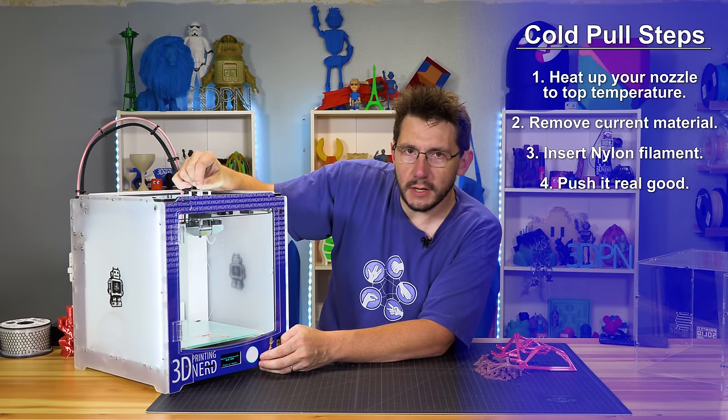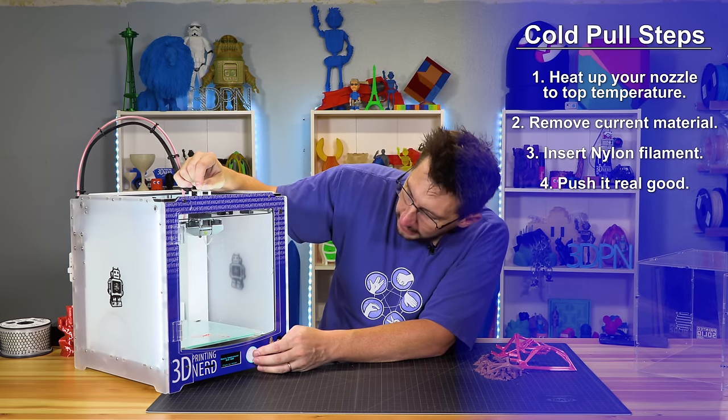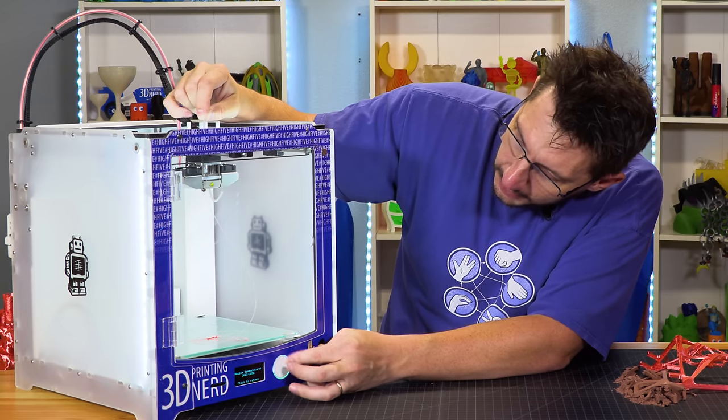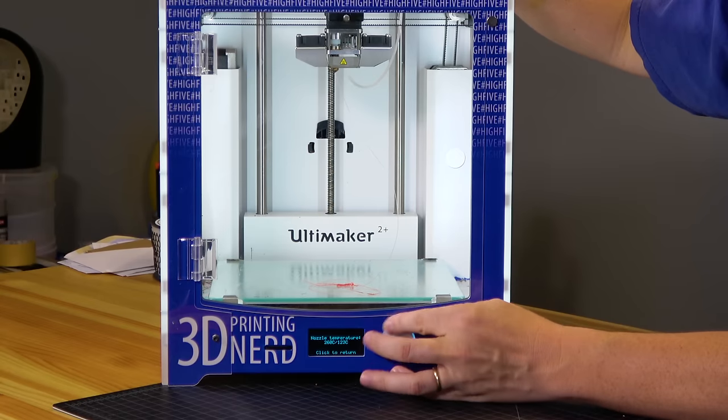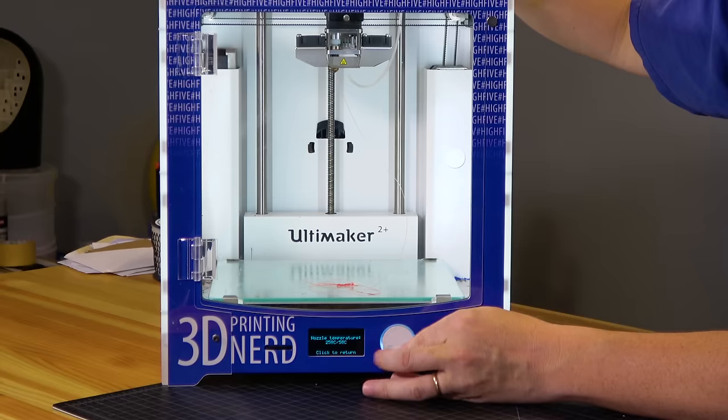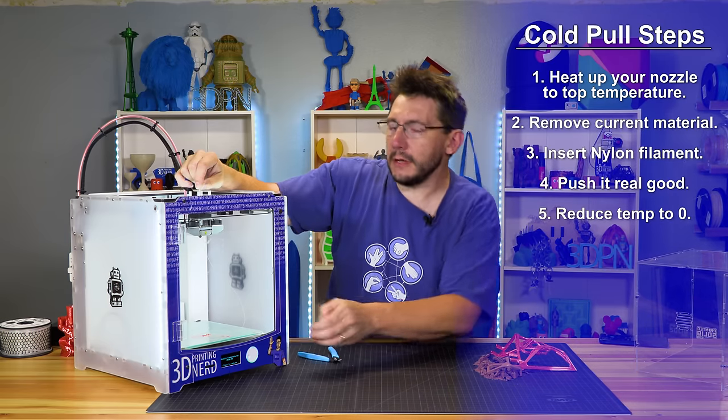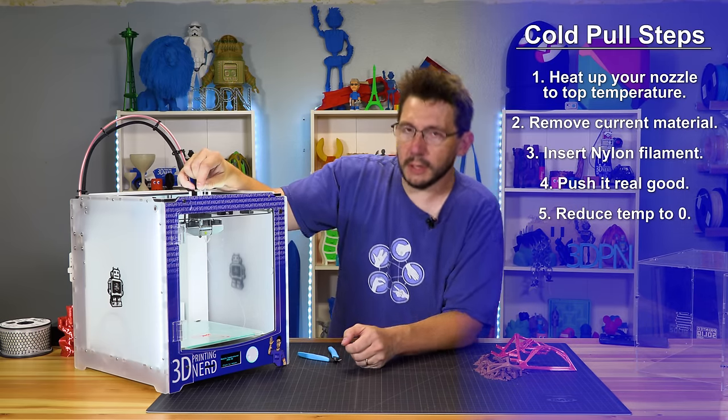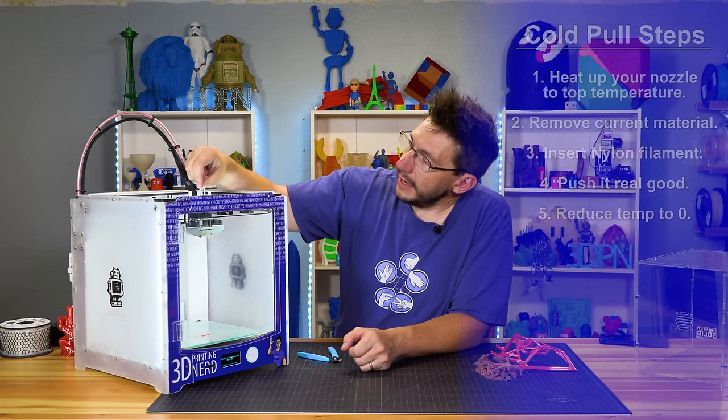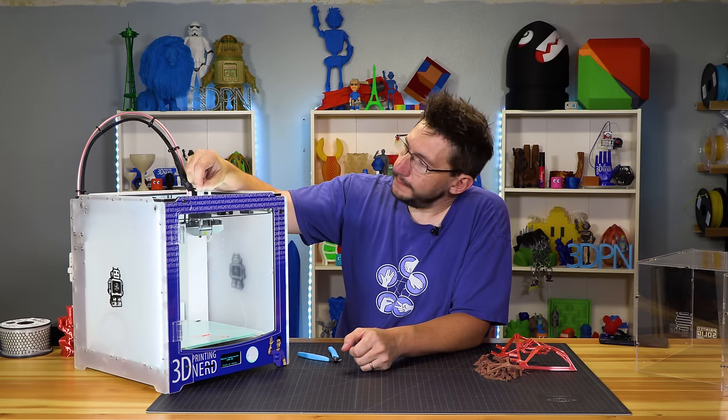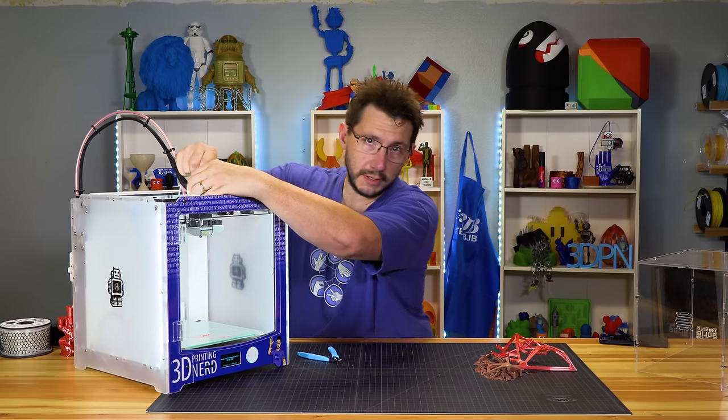Keep pressure on it, it doesn't have to be like you're pushing your car up a hill, you just need to keep pushing hard. And then while you're doing that, get the temperature down to zero, just back it all the way down. It won't take too long for it to get back down, but keep the pressure on until you don't see material coming out of the nozzle.